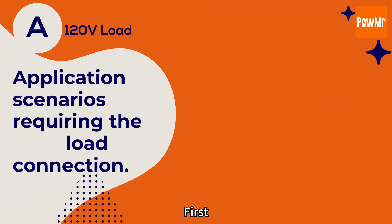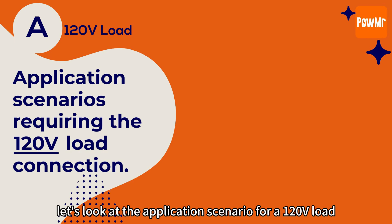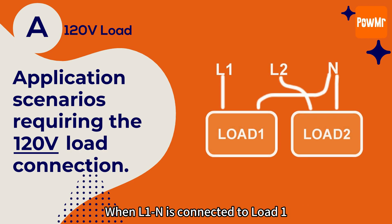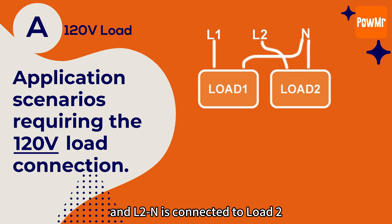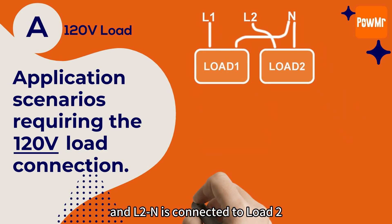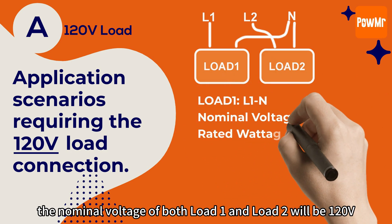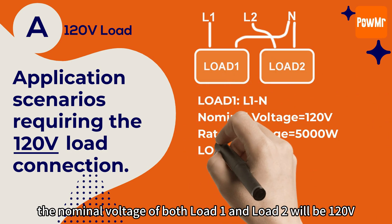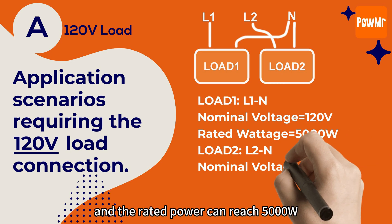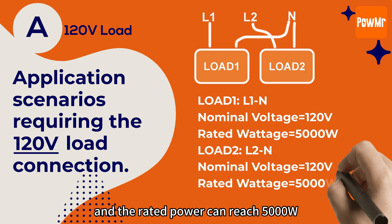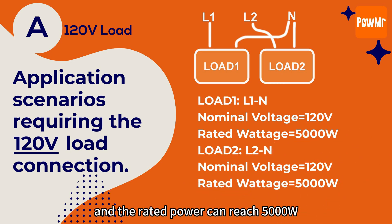First, let's look at the application scenario for a 120V load. When L1N is connected to load 1 and L2N is connected to load 2, the nominal voltage of both load 1 and load 2 will be 120V, and the rated power can reach 5,000W.